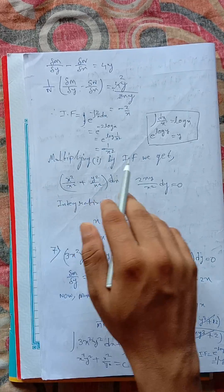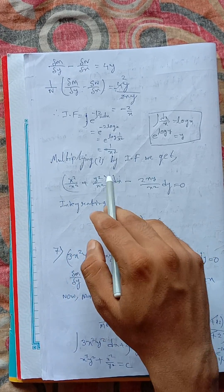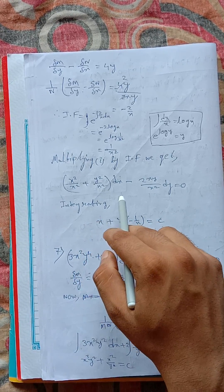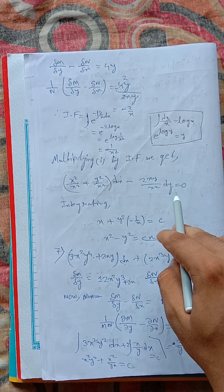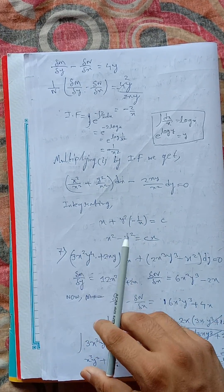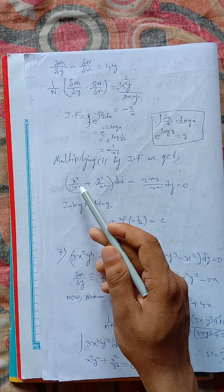Multiplying by integrating factor we get x square by x square plus y square by x square dx minus 2xy by x square dy equals to 0. Integrating, we get this becomes 1, so integration of 1 dx plus y square dx by x square.